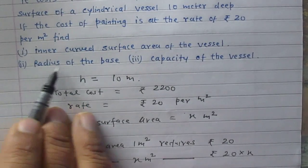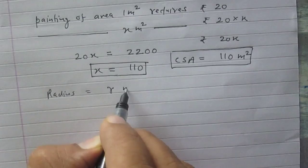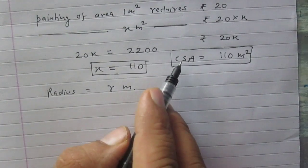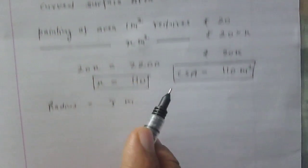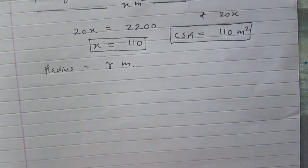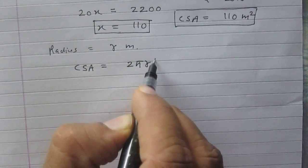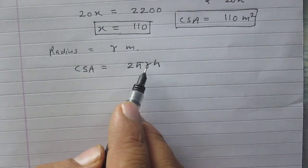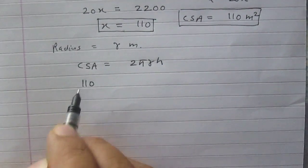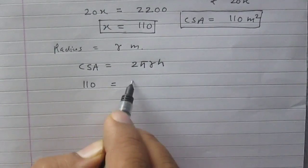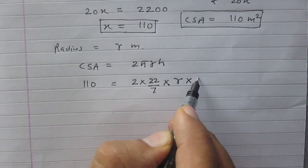In the second part, we are to find the radius of the base. Let us assume the radius of the base is r meters. We have found the curved surface area and are given the height. According to the formula, the curved surface area of a cylinder is 2πrh, where r is the radius and h is the height. Substituting the values: 110 = 2 × (22/7) × r × 10.